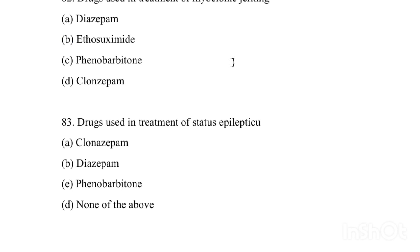Drugs used in the treatment of myoclonic jerking: Option A: Diazepam. Option B: Ethosuximide. Option C: Phenobarbitone. Option D: Clonazepam. Answer is Option C — Phenobarbitone is used for myoclonic jerking.